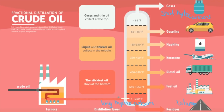Short hydrocarbons come off at the top, and long hydrocarbons come off at the bottom. Things at the top are very flammable; things at the bottom are not very flammable. Things at the bottom are very viscous, whereas things at the top are not viscous.